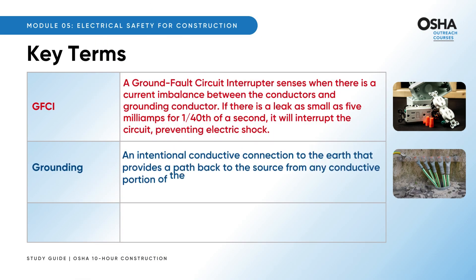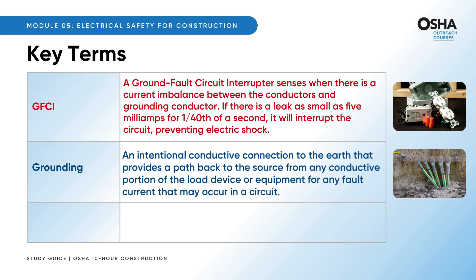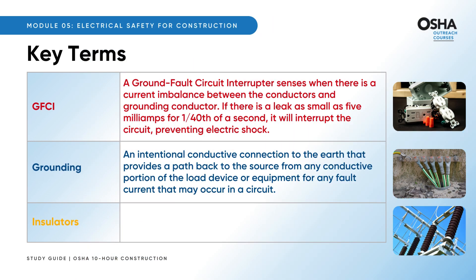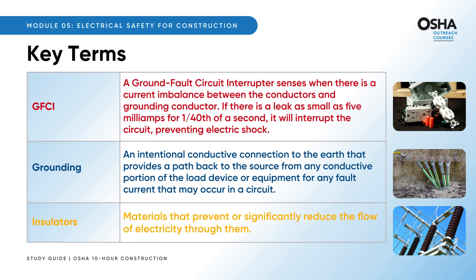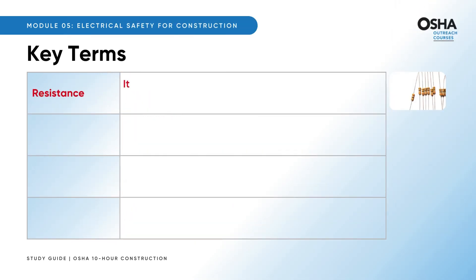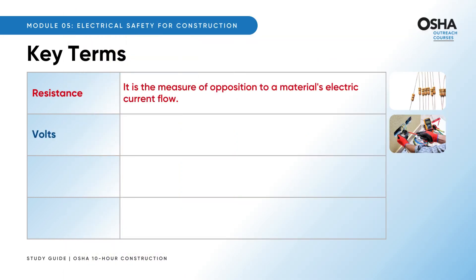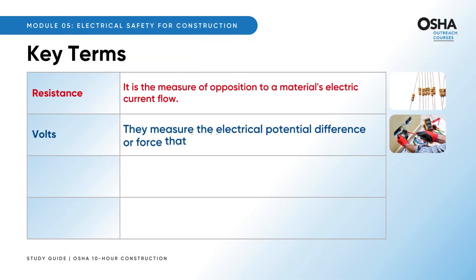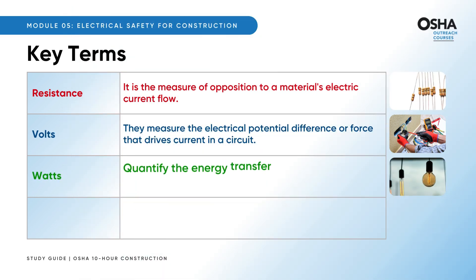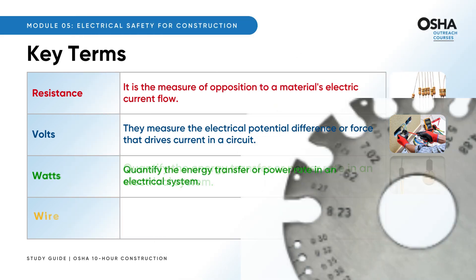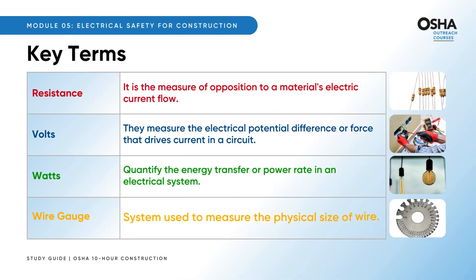Grounding is like a safety net — the intentional connection to the earth that helps divert any fault current away from you. Insulators are like electric roadblocks; they significantly reduce or stop the flow of electricity. Resistance is the opposition to electric current flow in a material. Volts measure the potential difference driving current in a circuit. Watts measure the energy transfer or power rate in an electrical system — the speedometers of electricity.